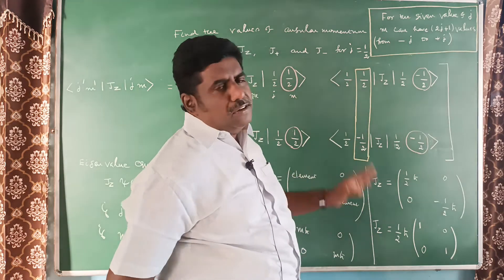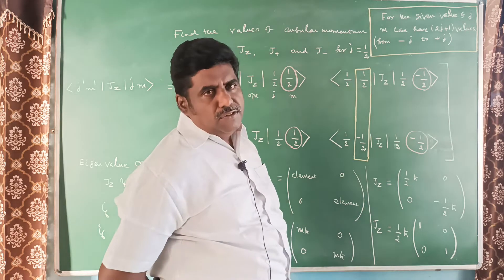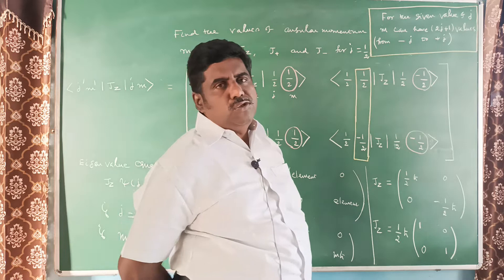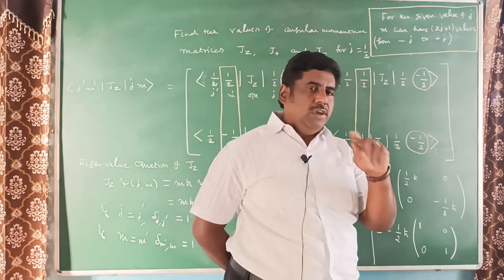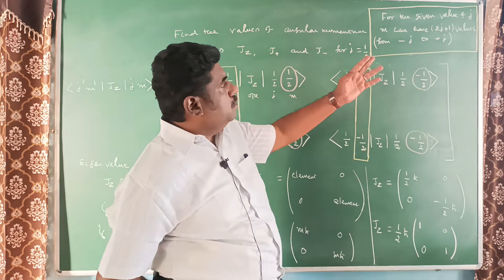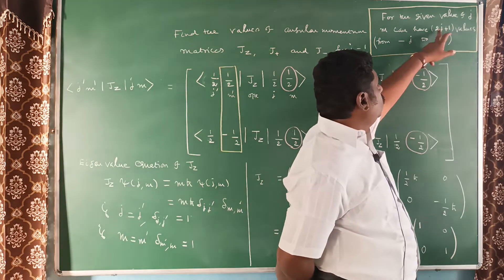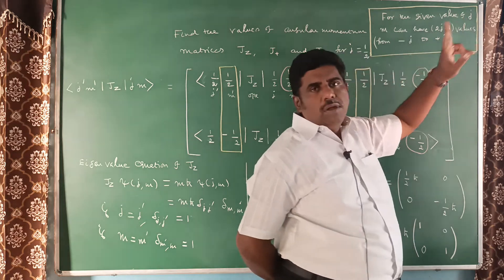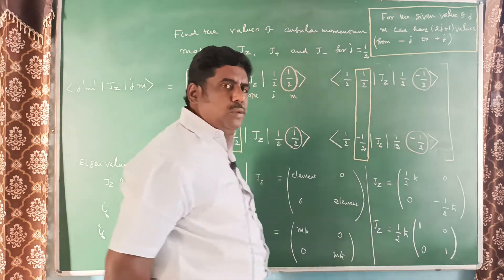Then we should think about the dimension of the matrix. For the given value of J, the dimension of the matrix is (2J+1) by (2J+1), meaning 2J+1 rows and 2J+1 columns. Here J equal to 1/2, so 2 times 1/2 plus 1 gives 2. So the dimension of the matrix is 2 by 2.